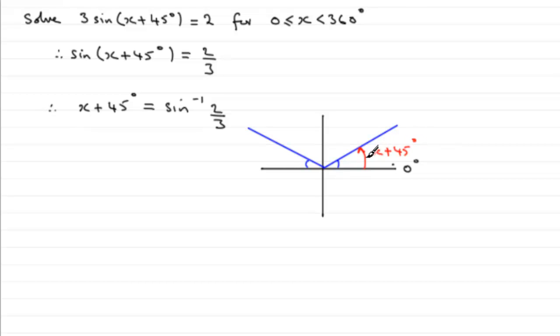The next solution, we start back from here, the zero line, turn to the next blue line all the way around till we get to there. This too is another x + 45° solution.